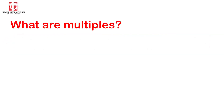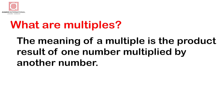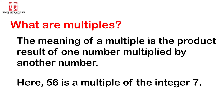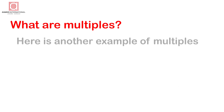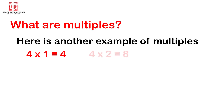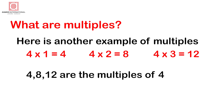What are multiples? The meaning of a multiple is the product result of one number multiplied by another. For example, 56 is a multiple of 7. We use multiplication tables to find multiples. Another example: 4 × 1 = 4, 4 × 2 = 8, 4 × 3 = 12. So 4, 8, and 12 are the multiples of 4.